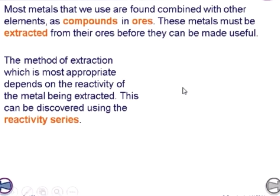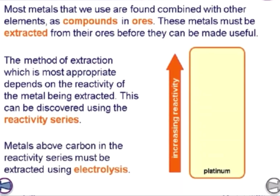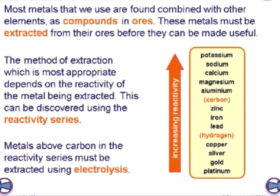Metals above carbon in the reactivity series must be extracted using electrolysis, because they are more reactive than carbon and therefore we cannot reduce them using carbon. We can reduce iron and zinc using carbon, but we cannot reduce aluminum. So we have to use electrolysis by passing electric current. Metals above carbon in the reactivity series must be extracted using electrolysis.